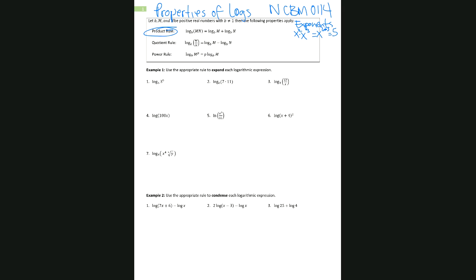I'm not going to derive it, but remember how exponential and logarithmic functions are inverses of each other — they share a lot of their properties. So we call this the product rule because we go from the log of a product, m times n, and expand it into two logs. We call this the sum of two logarithmic expressions — we went from the log of a product to the sum, because we're adding two logs.